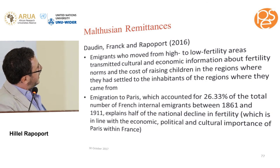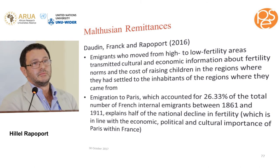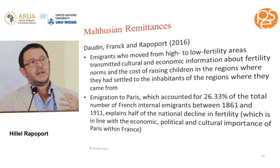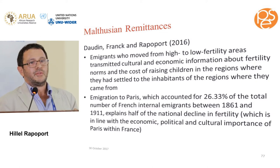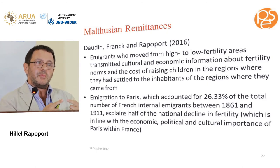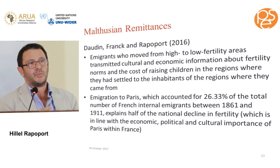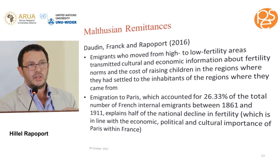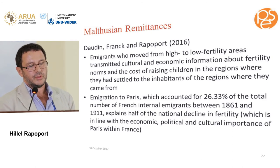We find that internal migration explains two-thirds of the decrease in fertility and the convergence in fertility across regions in the period we study. Paris alone explains two-thirds of the migration effect — though it accounts for only one quarter of total internal migration. This disproportionate Paris effect is consistent with cultural diffusion, as France was politically centralizing and diffusing Parisian culture outward. This is consistent with the same direction as the other studies presented.